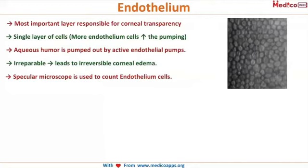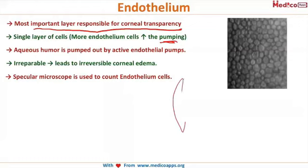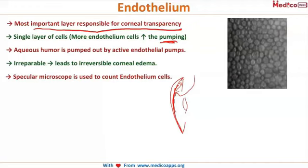The endothelium is the most important layer, responsible for corneal transparency. The endothelial pump helps maintain corneal transparency. The aqueous humor, produced inside the eye, is drained through the angle via the trabecular meshwork into the episcleral veins. Some of it is always in contact with the endothelium of the cornea, and it will be absorbed — leading to edema and deterioration in vision — but this is prevented by the active endothelial pumps, which pump the aqueous humor out, keeping the cornea transparent.